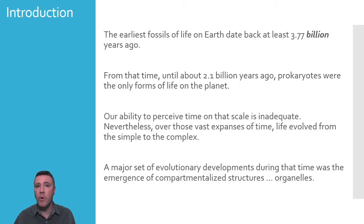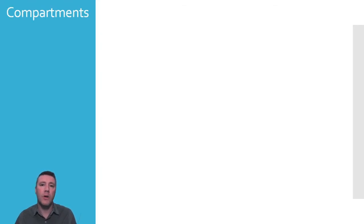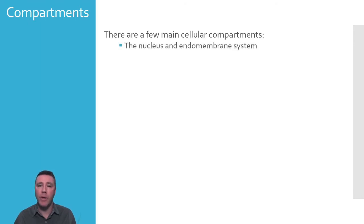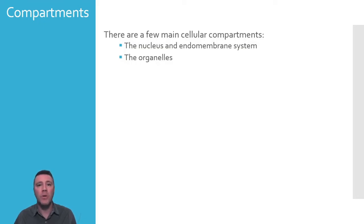One of the most important evolutionary developments that made possible complex multicellular eukaryotic life is the compartmentalization within cells. On the largest scale within a cell, there are three main compartmental regions that can be identified. The first is the nucleus and endomembrane system. This region includes the nucleus, nucleolus, and the rest of the nuclear contents, as well as the smooth and rough endoplasmic reticula. Those previous two regions are suspended in an aqueous solution that comprises the third region, the cytosol.